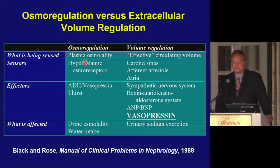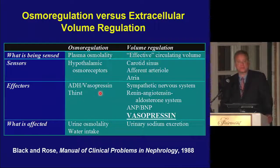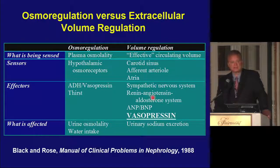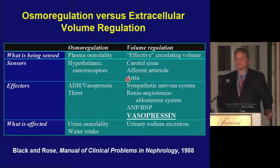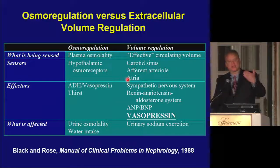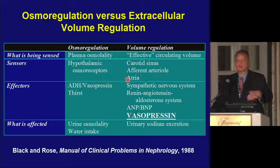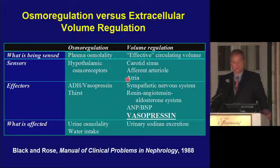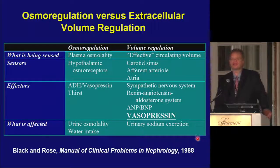Osmoregulation happens through hypothalamic osmoreceptors; volume regulation through baroreceptors in many locations in the body. The effectors for osmoregulation are vasopressin and thirst. For volume regulation, the effectors are the sympathetic nervous system, the renin-angiotensin-aldosterone system, ANP and BNP — which are negatively regulated in salt balance — and vasopressin. This is where vasopressin plays a role in the defense of arterial circulation and where physiological confusion comes in: it preserves blood pressure and perfusion, separate from water homeostasis, creating crosstalk between sodium and water disorders.